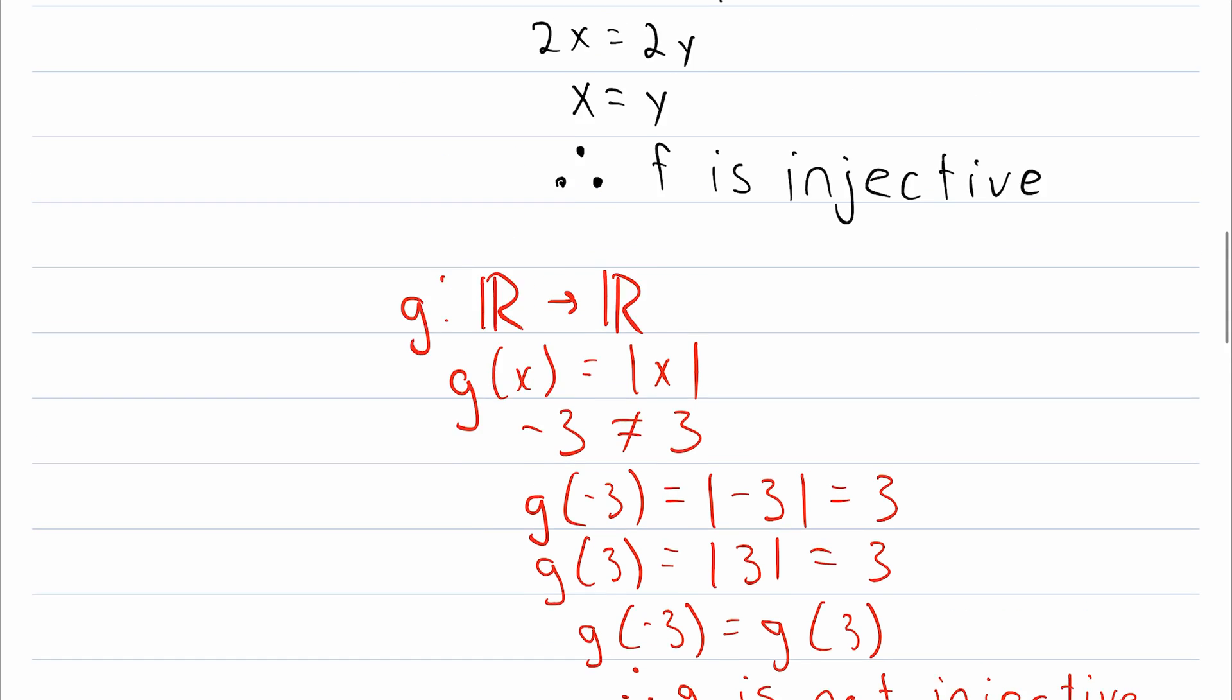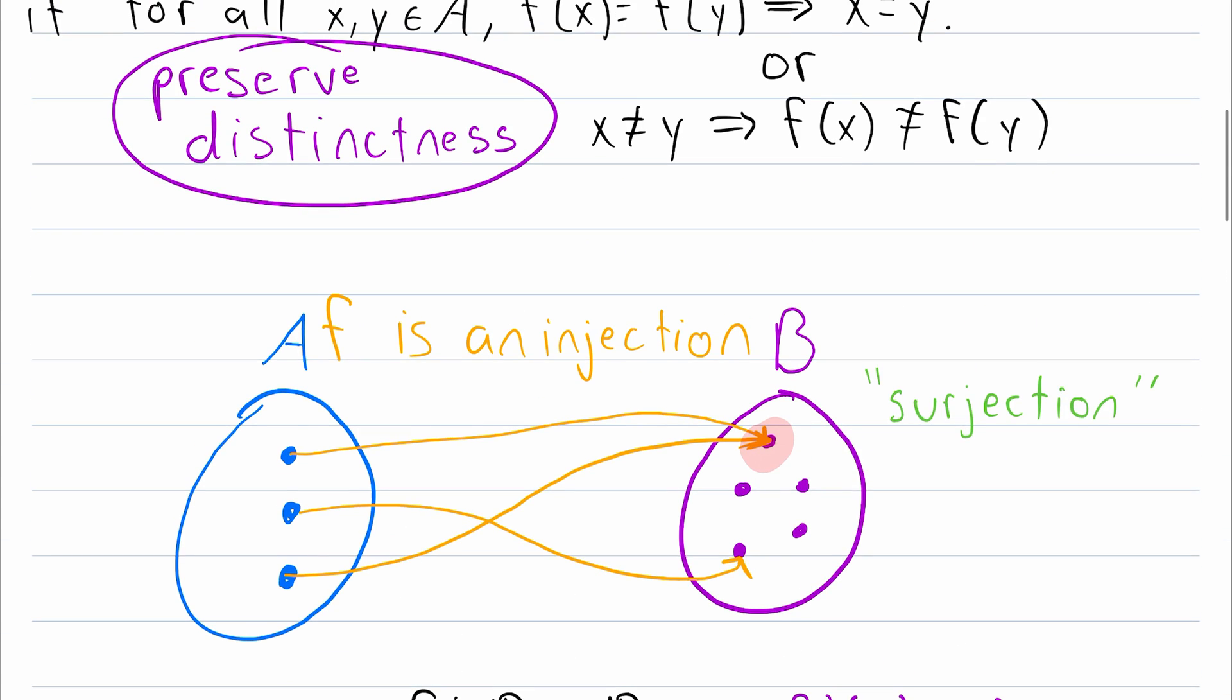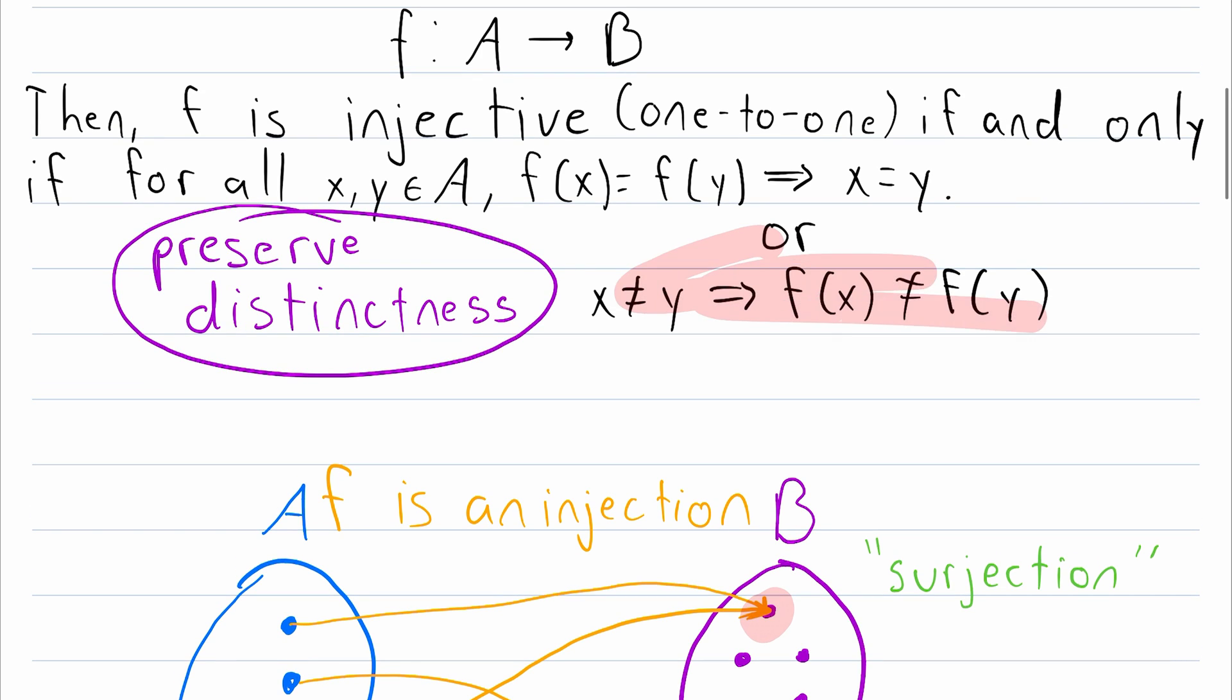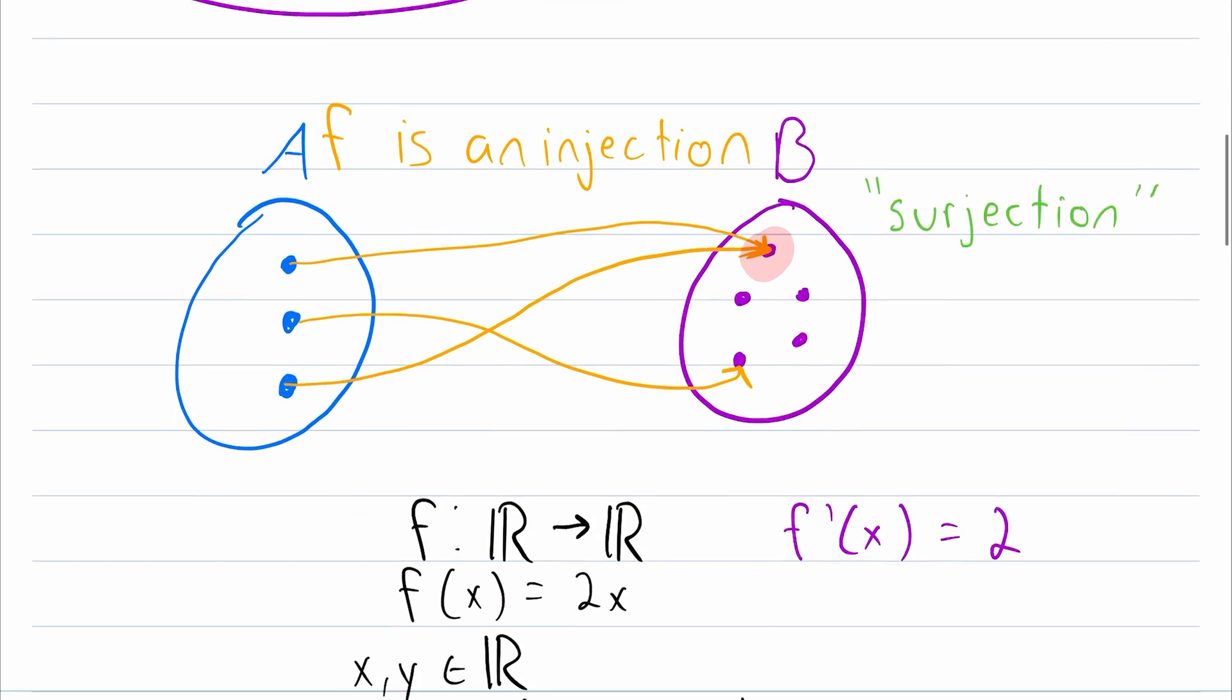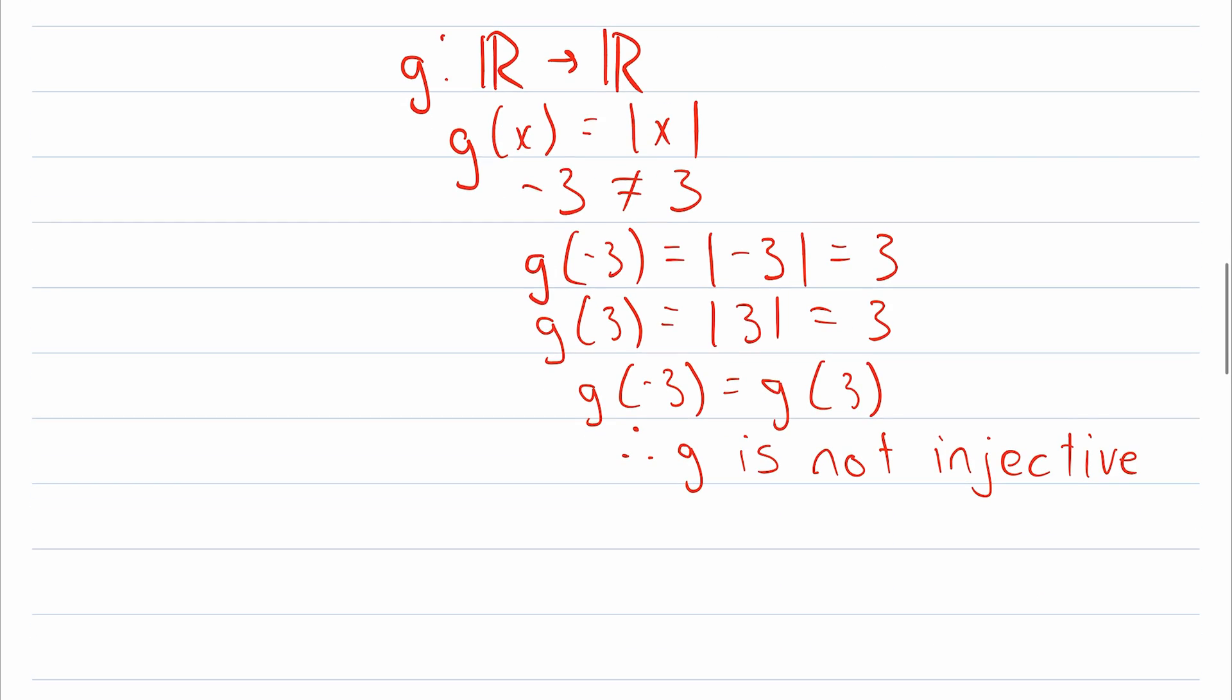Pretty cool, and pretty straightforward. Again, that was just using the contrapositive. We showed that the contrapositive doesn't hold. We found two distinct elements that had equal images. So since the contrapositive doesn't hold, the function cannot be injective.